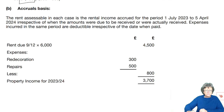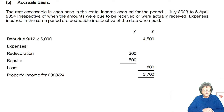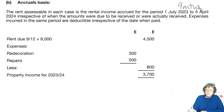If it's on an accruals basis, the rent assessable in each case is the rent accrued for the period 1st of July 2023 to the 5th of April, irrespective of when the amounts were due to be received or actually received. Expenses incurred in the same period are deductible irrespective of the date they were paid. In that period, it was only a nine-month period, so this is nine months — you get a proportion of the annual.